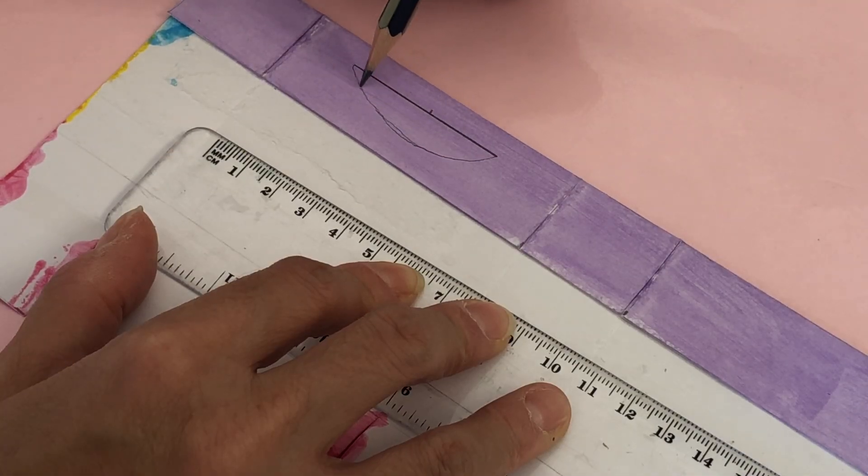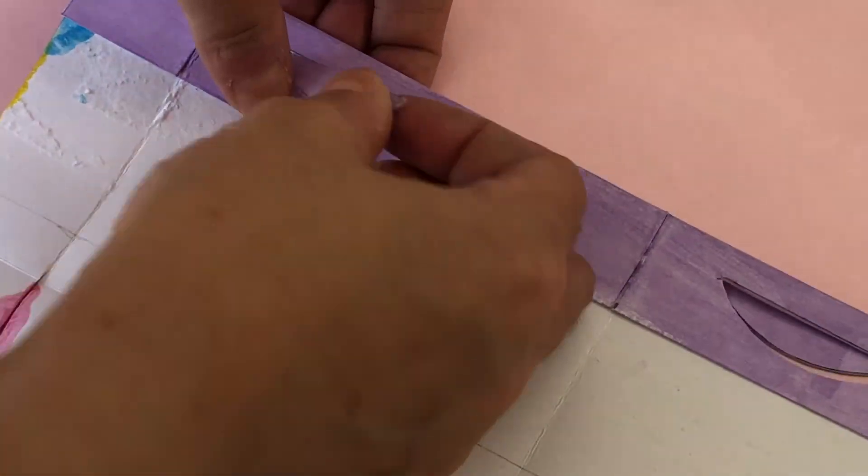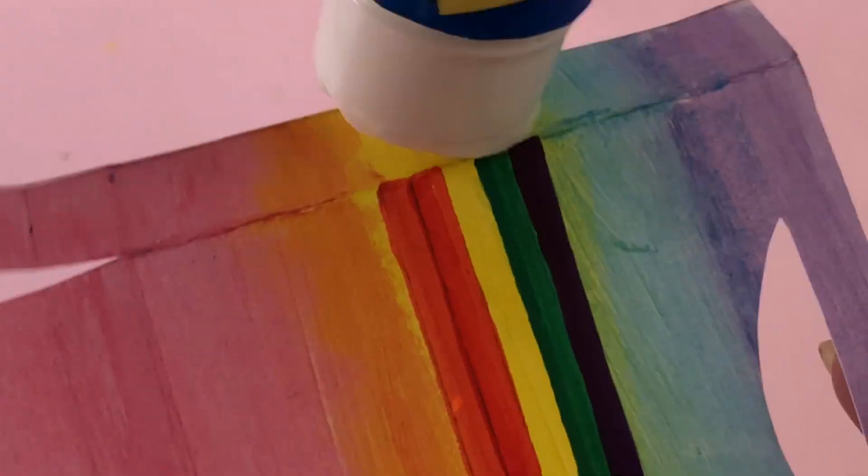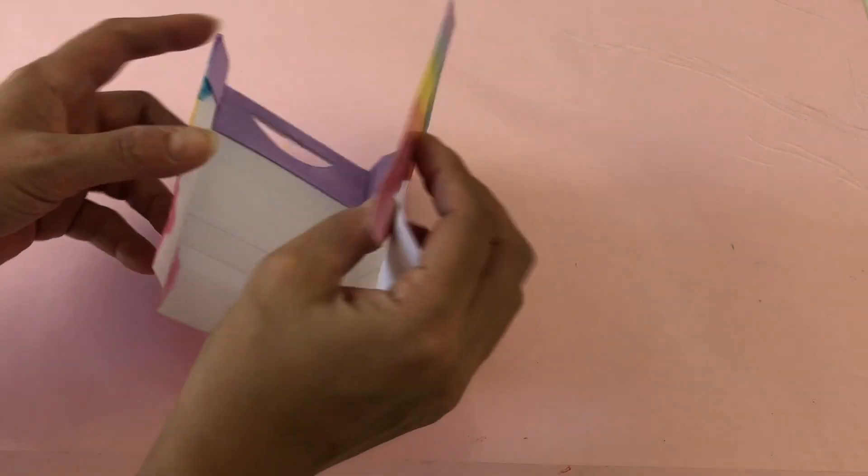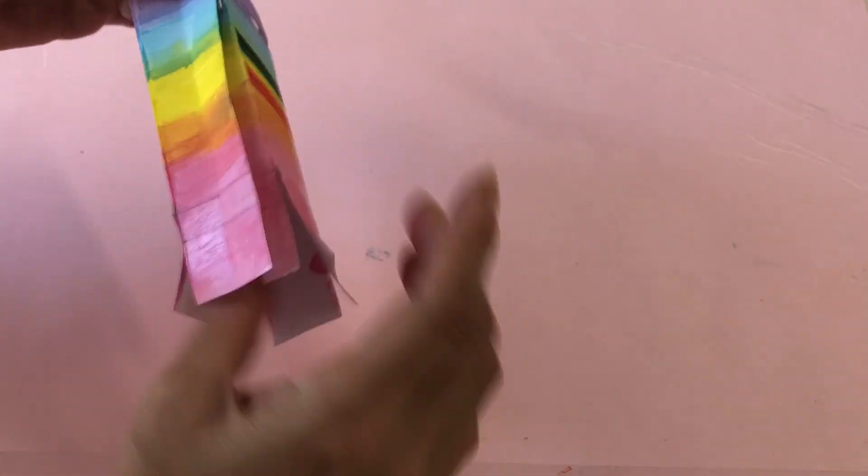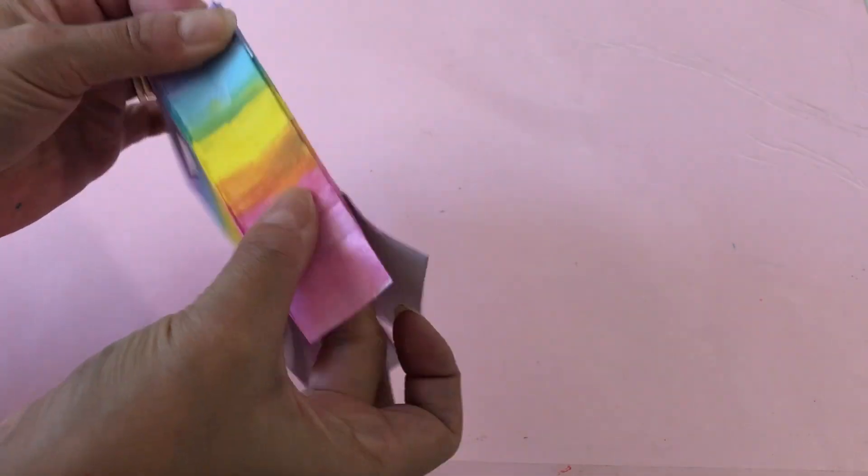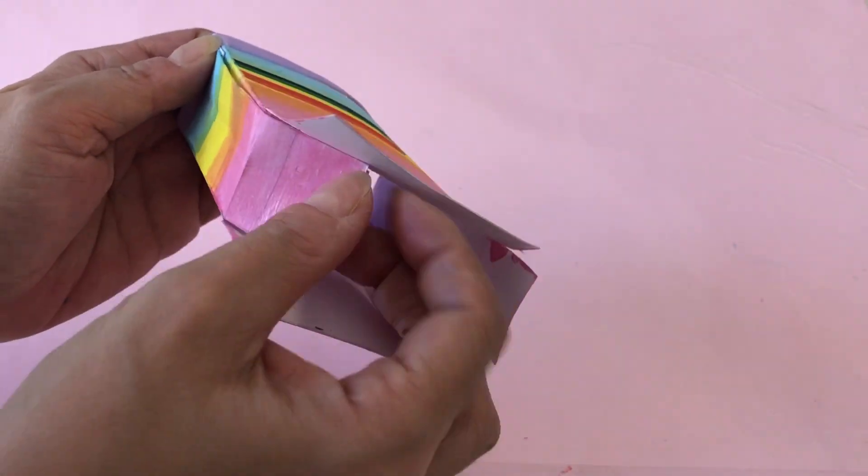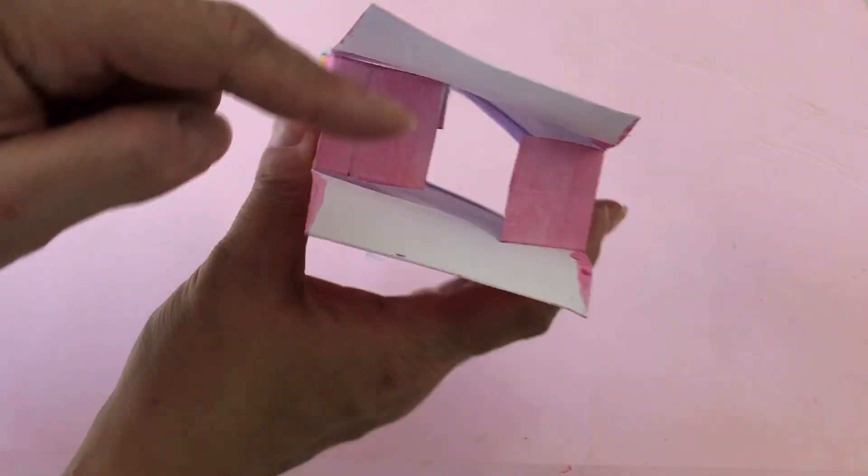Put more glue on the side tab, joining the bag together. Apply glue stick to the painted side of the short tabs, then fold in. Put glue on the non-painted side of the long tabs to seal the base of the bag shut. Great, our bags are ready.